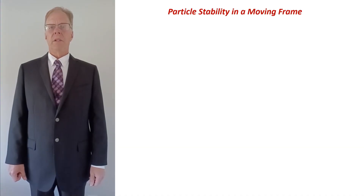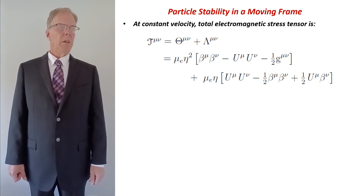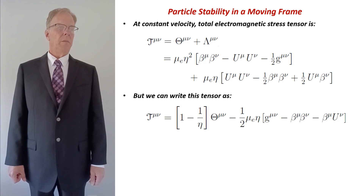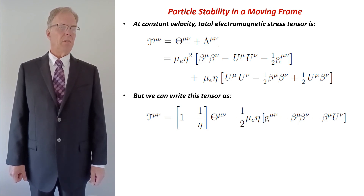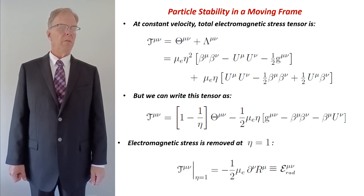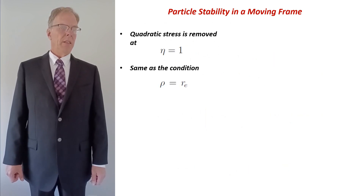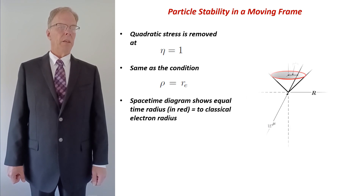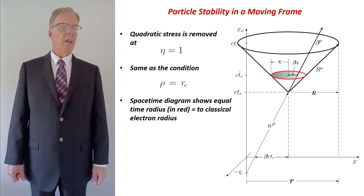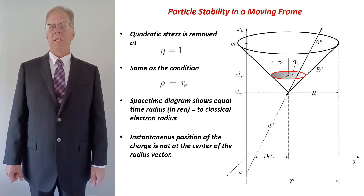Particle stability at constant velocity can be demonstrated by writing out all the terms of what we'll call the total electromagnetic stress tensor. Terms in the vacuum tensor can be rearranged and we can write the tensor as shown here. This makes it easy to see how the electromagnetic stress is removed at eta equal to one. When this condition is met, the total stress tensor takes on a very simple form as the covariant derivative of the vector r nu. Now, eta equal one is the same as the condition rho equal to re and this is an equal-time three-sphere in Minkowski space shown by the red circle in the spacetime diagram. Of interest here is to note that the instantaneous retarded position of the charge is not at the center of that three-sphere.